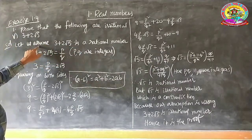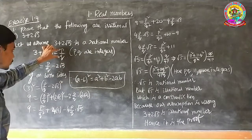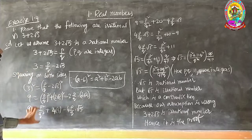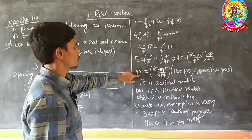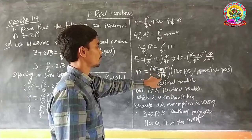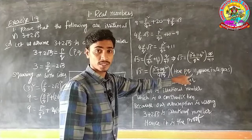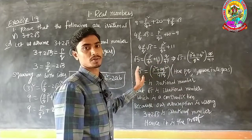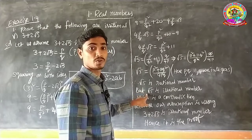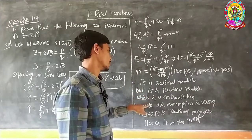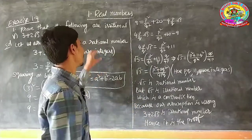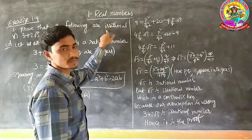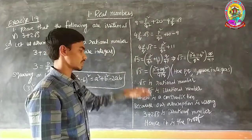To recap: we assumed 3 plus 2 root 5 is rational, expressed it as P by Q, transposed 2 root 5 to the right-hand side, squared both sides, and simplified to get root 5 equals (P squared plus 11Q squared) by 4PQ. Since P, Q, 11, and 4 are integers, root 5 would be rational — but root 5 is irrational, a contradiction. So 3 plus 2 root 5 is an irrational number.